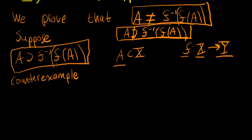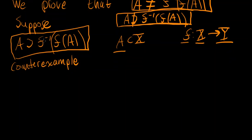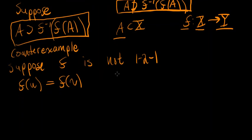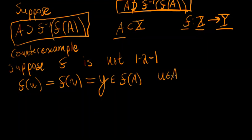So let's try to formulate a possible function f such that this will not hold. Suppose f is not one-to-one. I'm going to further suppose that f(u) = f(v), and f(u) = f(v) = some y, such that y is in f(A). But u is in A, and v is not in A. This seems very contrived, but you'll see why this is going to work in a little bit.